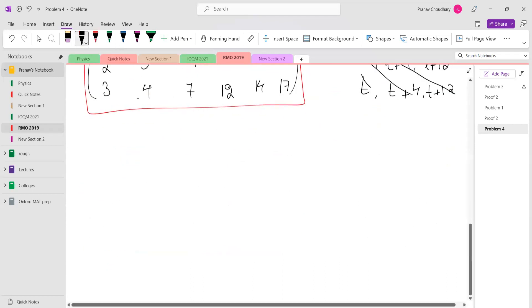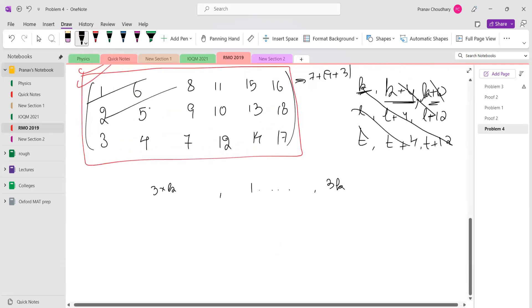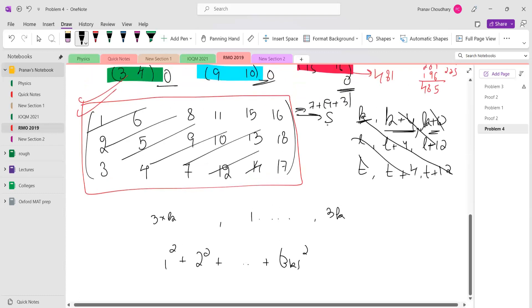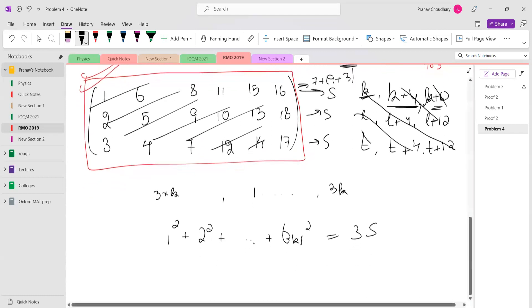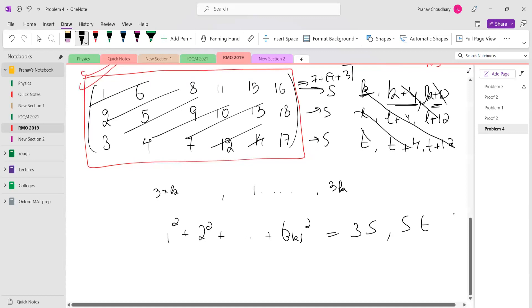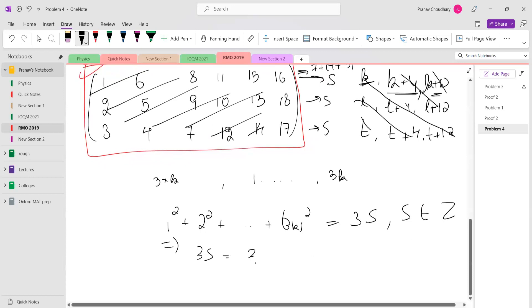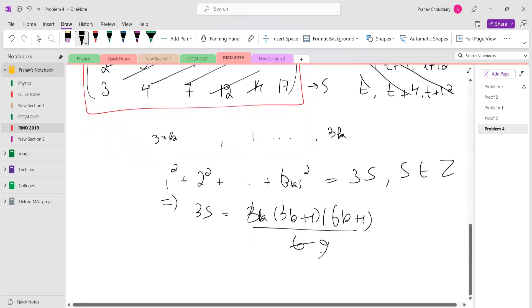One more thing you could have noticed earlier: you want to extend to a 3×k array, which means the numbers will be 1 till 3k. So the sums of squares of all the elements in this grid will be 1² + 2² + ... + (3k)². And if the sum of squares in the first row is S, all these are also S. Which means there should be 3S, and S is an integer. So this implies 3S = N(N+1)(2N+1)/6.